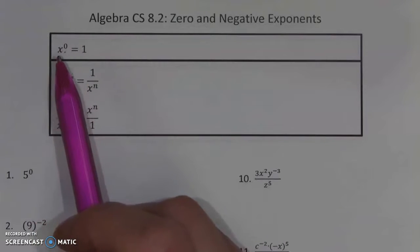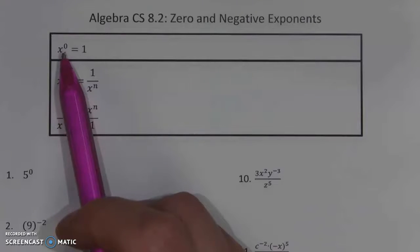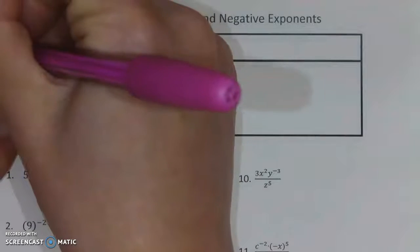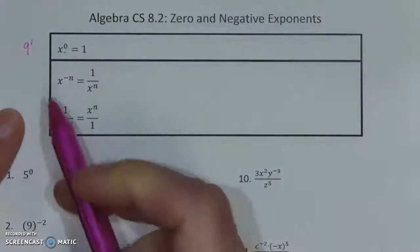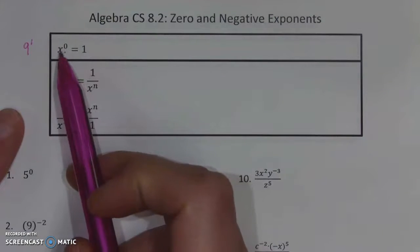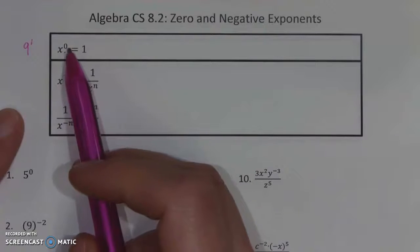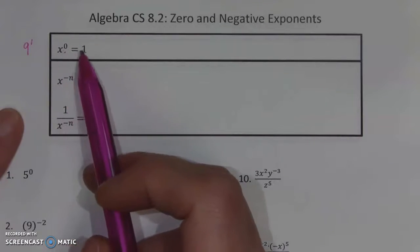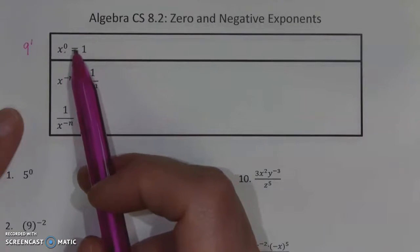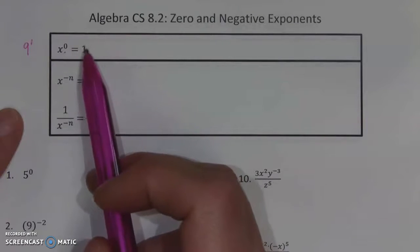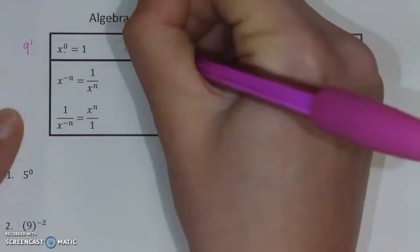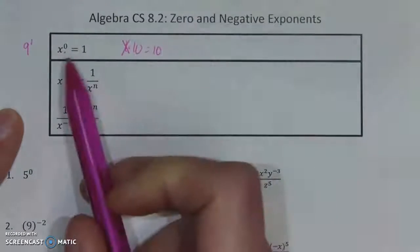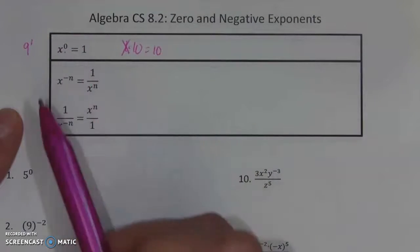An exponent tells you how many times a number is being multiplied by itself. We saw in the past that if you just have a number like nine, it's technically being multiplied by itself one time, because we have one nine. So if you think about x being multiplied by itself zero times, it means it was never really multiplied. The only thing being multiplied would be the number one, which when you multiply does nothing to the number — one times ten still gives you ten. So this is saying that the x basically isn't there.